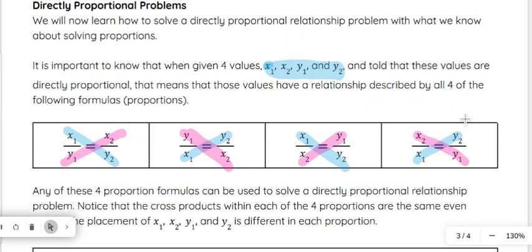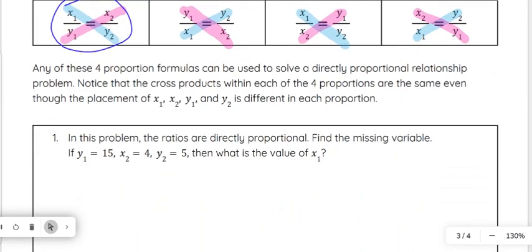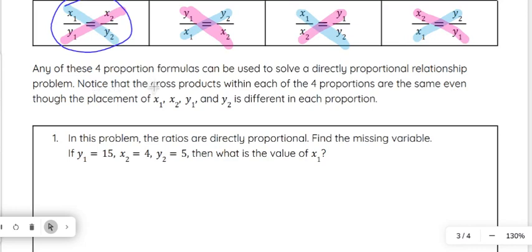All right. So those are our cross products, and these are all really the same cross products. So that's why they're all going to be able to be used. However you prefer to set it up is fine. But all four of those will work because they are all multiplying the same cross products. So when I do it, I typically will use this first one, the x1 over y1 and the x2 over y2. But again, you can use any of these four. So any of the four can be used to solve the directly proportional relationship problems. Notice that those cross products, like we said, are the same even through the placement of x1, x2, y1, and y2 in different places.